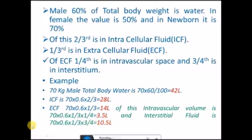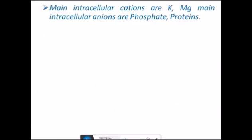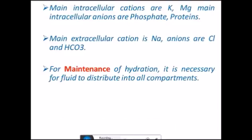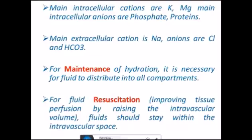The main intracellular cations are potassium and magnesium. The main intracellular anions are phosphate and proteins. The main extracellular cation is sodium, and anions are chloride and bicarbonate. For maintenance of hydration, it is necessary for fluid to distribute into all compartments. For fluid resuscitation, we want the fluid to remain in the intravascular space, improving tissue perfusion by raising the intravascular volume.